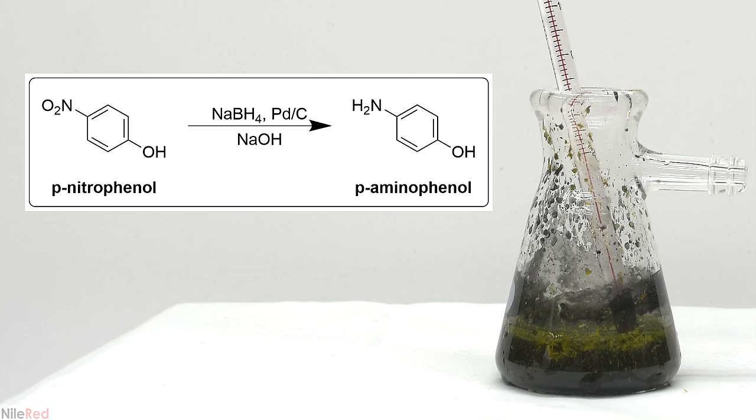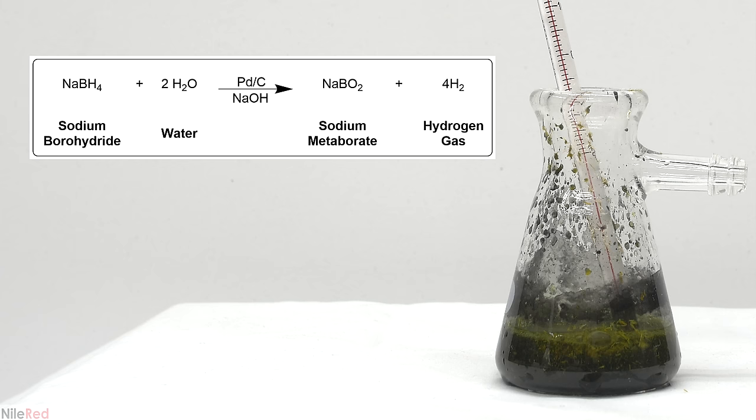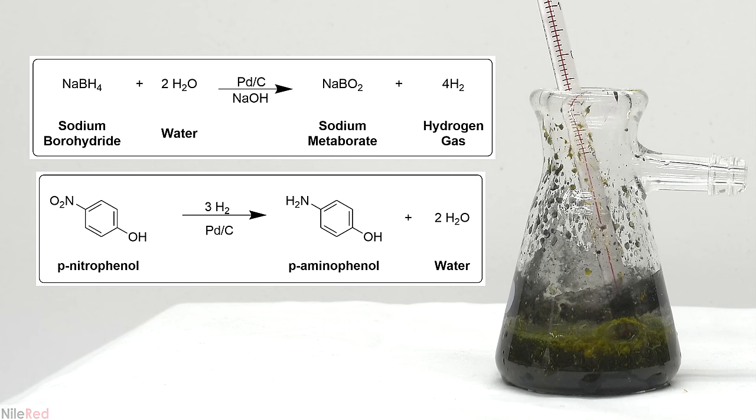The first thing that it does is catalytically break down the sodium borohydride to produce hydrogen gas. It then catalyzes the actual reduction reaction between hydrogen gas and p-nitrophenol.